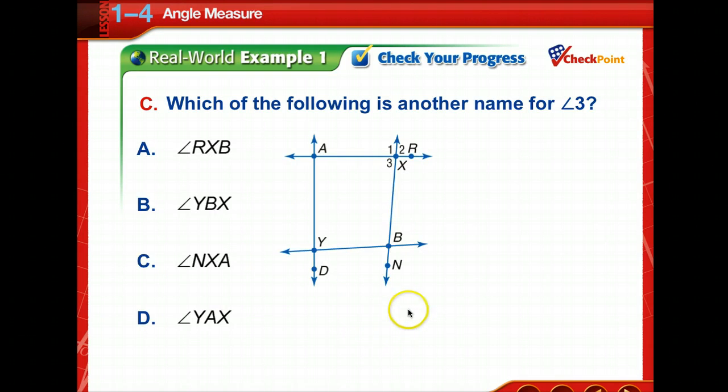Okay, which of the following is another name for angle 3? Oh, angle 3. Okay, so pause for a moment and see what you find. Angle 3, of course, we already know that that's point X, so X has to be in the middle, so we've only got two choices. And is RXB angle 3? No, that's on the other side. So it has to be NXA, or we could call it AXN, but X needed to be in the middle. Good job.